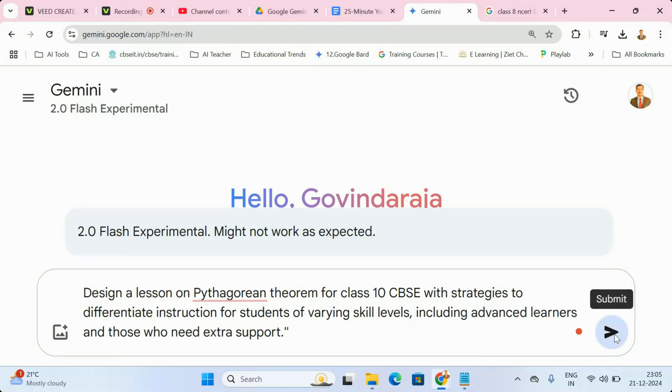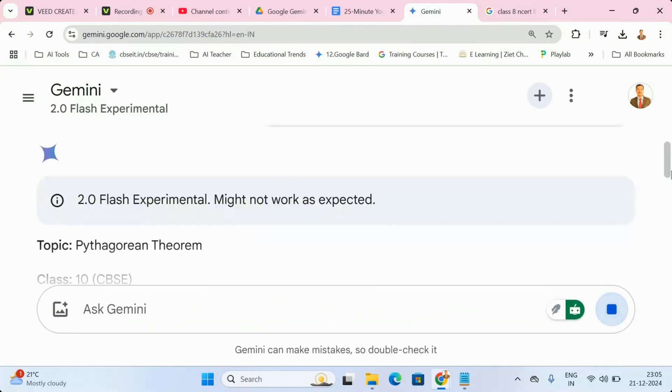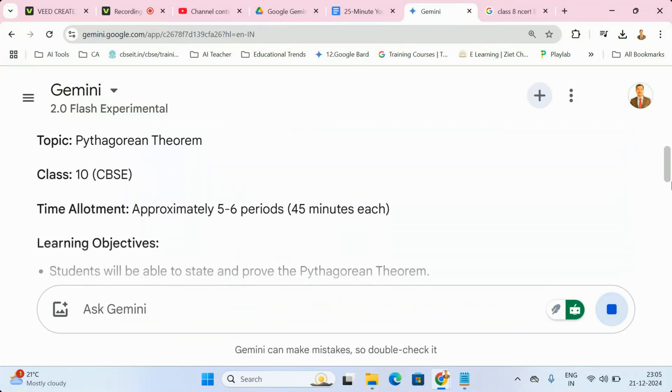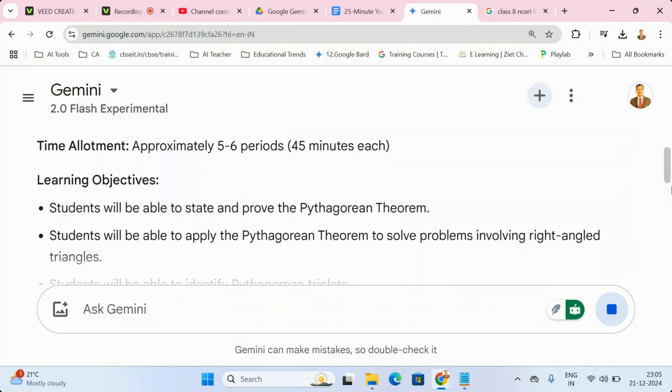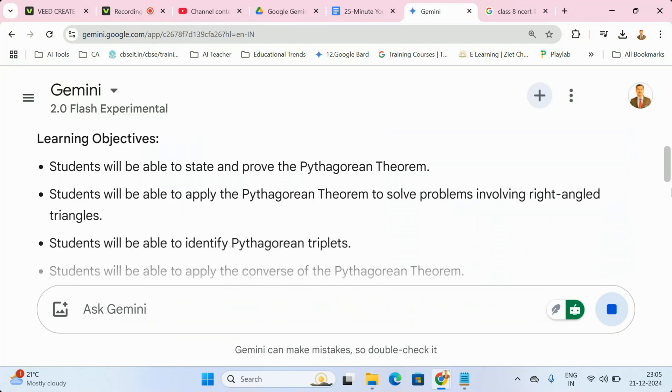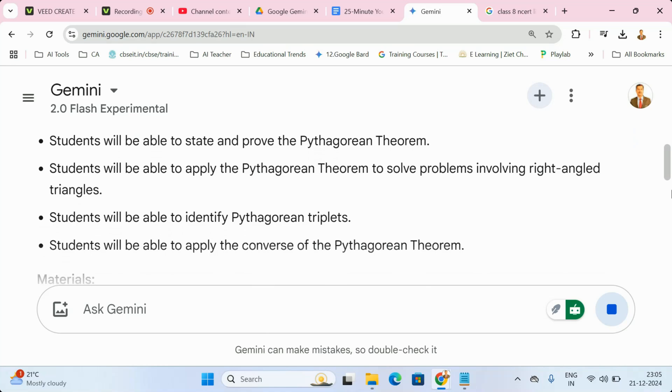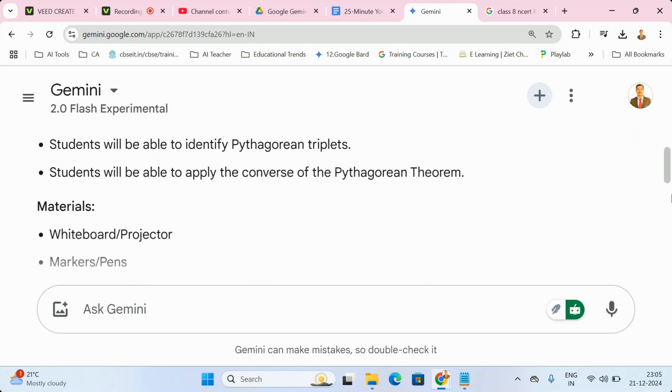Let's say you're covering the Pythagorean theorem. Gemini will suggest ways to challenge advanced learners with proofs while offering step-by-step visual aids for students who need extra support. It's like having a co-teacher brainstorming with you.